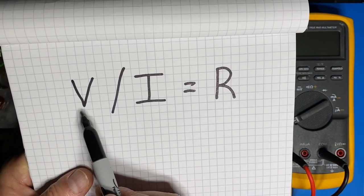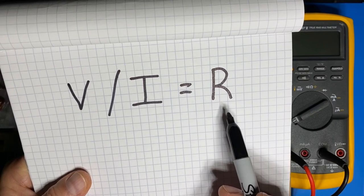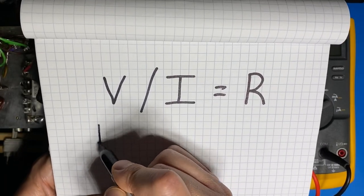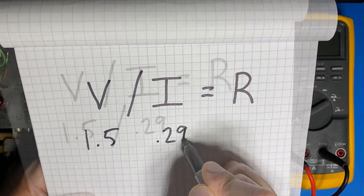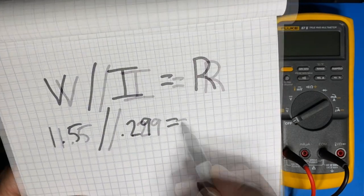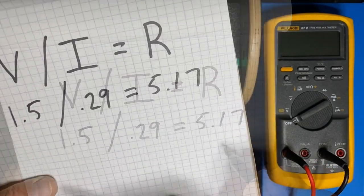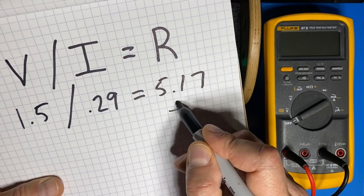Let's use this now to calculate the size of our dropping resistor. So again Ohm's law tells us that voltage divided by current equals resistance. In our case our voltage is 1.5 volts and our current is 0.29 amps and 1.5 divided by 0.29 equals 5.17. So now we know that our dropping resistor needs to be about 5.17 ohms.